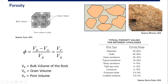The mathematical formula is quite simple. Porosity (φ) equals bulk volume minus grain volume, all divided by bulk volume — or equivalently, pore volume divided by bulk volume. This table shows typical porosity values for different lithologies.